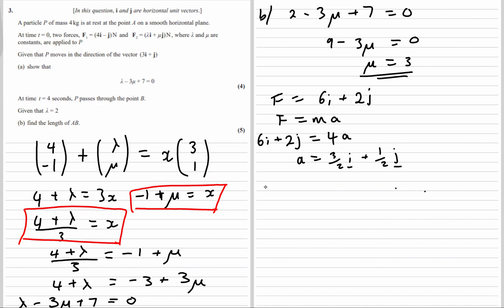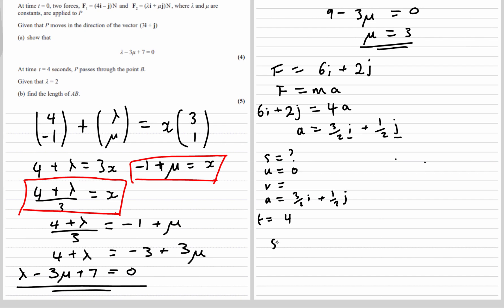We need the displacement. The initial velocity is 0. We know the acceleration is 3 over 2i plus a half j, and we know the time is 4 seconds. So S equals UT plus half AT squared. So 0 times 4 is 0 plus half AT squared. So 16 half is 8. 8 times 1 and a half is 12, and 8 halves are 4. So it's 12i plus 4j.